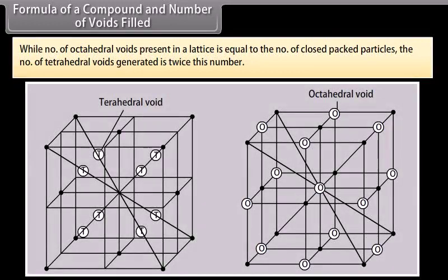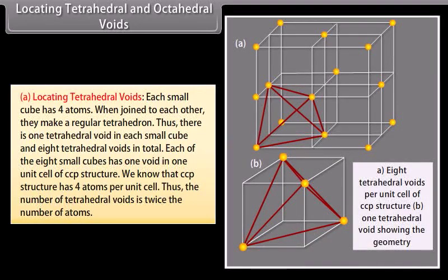The number of octahedral voids present in a lattice is equal to the number of close-packed particles, while the number of tetrahedral voids generated is twice this number. Each small cube has four atoms; when joined they make a regular tetrahedron, so there is one tetrahedral void in each small cube and eight tetrahedral voids in total. Since CCP structure has 4 atoms per unit cell, the number of tetrahedral voids is twice the number of atoms.